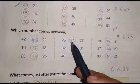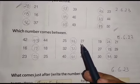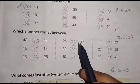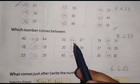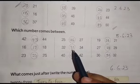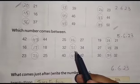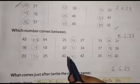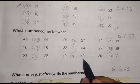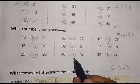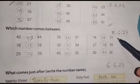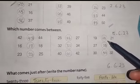What comes between 25 and 27? We will write 26. 32 और 34 के बीच में क्या आता है? 33. 44 और 42 के बीच में क्या आता है? 43. 19 और 21 के बीच में आता है? 20.